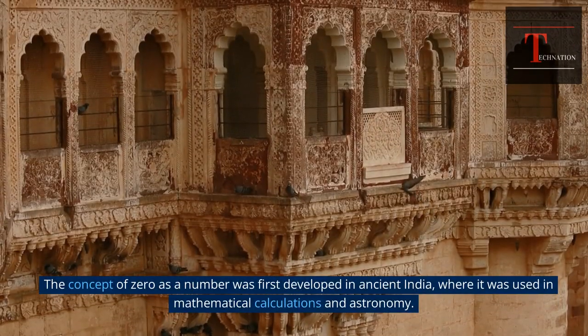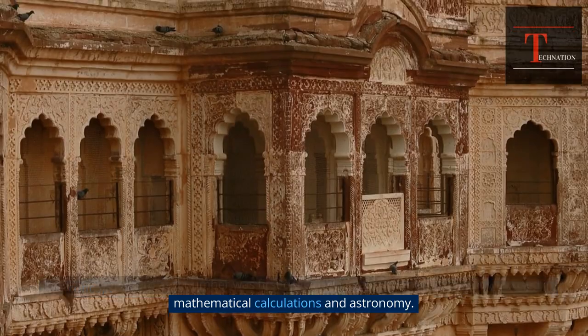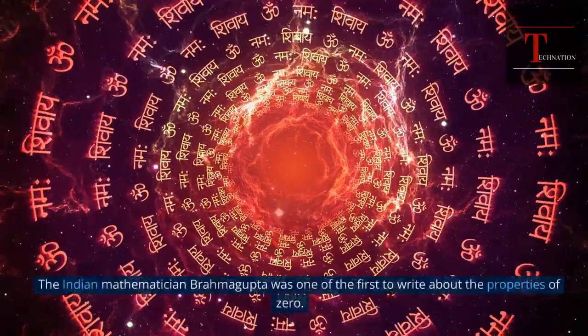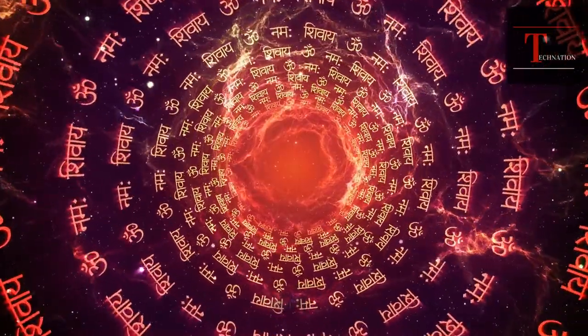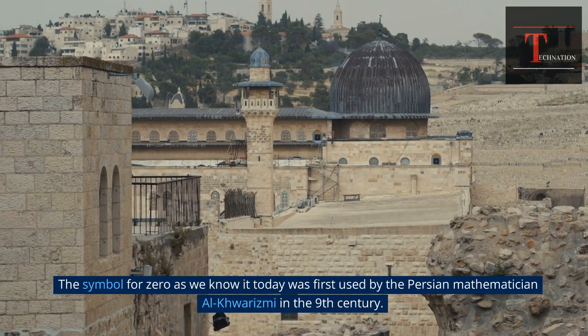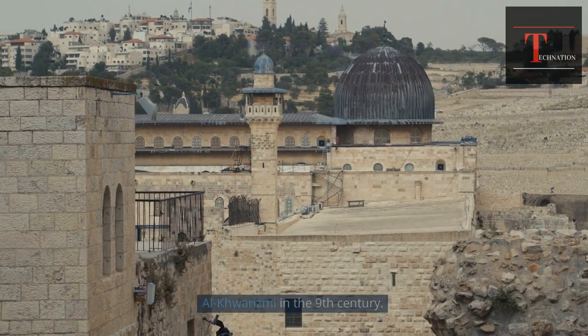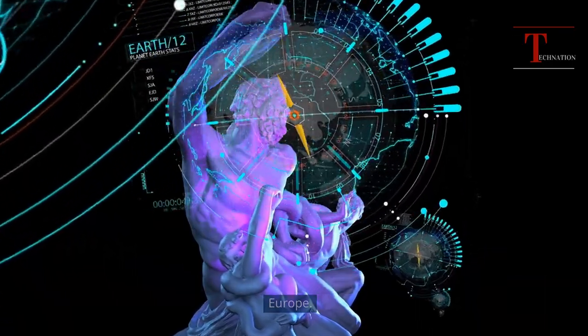The concept of zero as a number was first developed in ancient India, where it was used in mathematical calculations and astronomy. The Indian mathematician Brahma Gupta was one of the first to write about the properties of zero. The symbol for zero as we know it today was first used by the Persian mathematician Al-Khwarizmi in the ninth century. This symbol was later adopted by Arab mathematicians and eventually made its way to Europe.